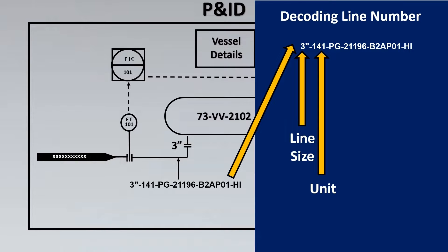The second thing is the unit. Which unit is it belonging to? So plants are usually divided into various units like 141, 143, etc. PG stands for what is the fluid code. So here it's process gas for example. So you understand what type of fluid. If it's hydrogen you might need to have some special precautions, etc. So fluid code helps us to understand what is inside that line.